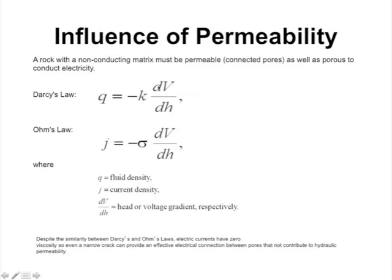Darcy's Law says that fluid flow density equals minus k times the difference in head over a distance dh/dl. You can see it's just like Ohm's Law, where current density j equals minus the conductivity sigma times the voltage gradient dV/dh. This is why we can talk about the correspondence between permeability and resistivity — because of the similarity between Darcy's Law and Ohm's Law.